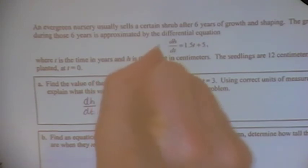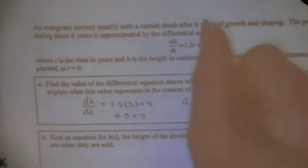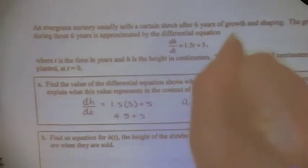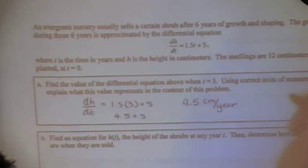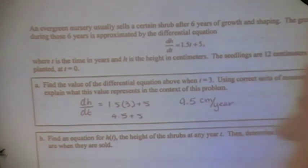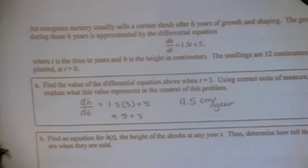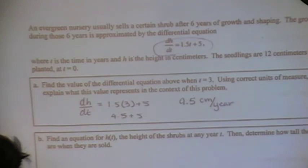Just plug 3 in. Use correct units — centimeters per year. And explain what this value represents: 9.5 centimeters per year, because this is a rate. It's the instantaneous rate at 3 years — this is how much the shrub is growing at year 3.